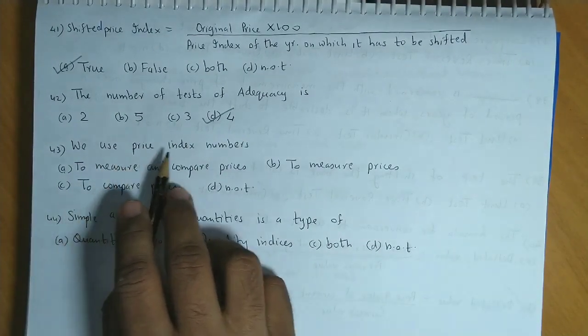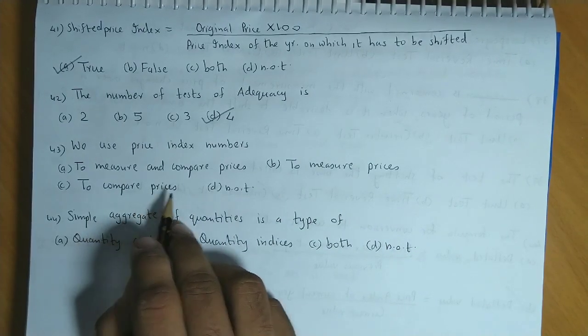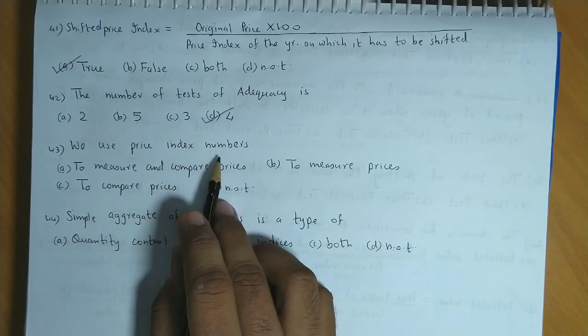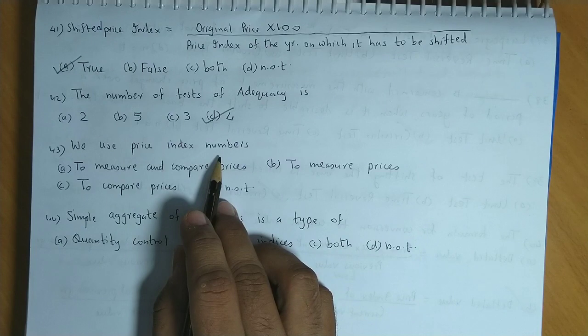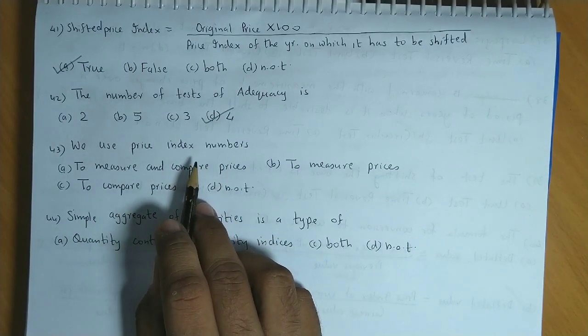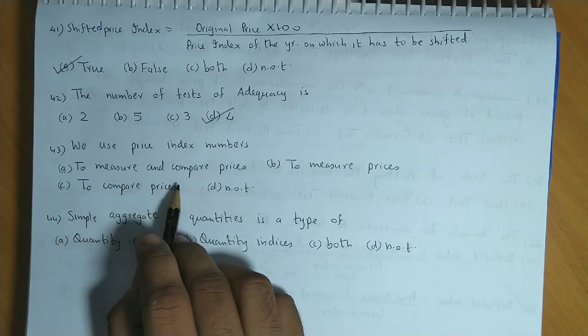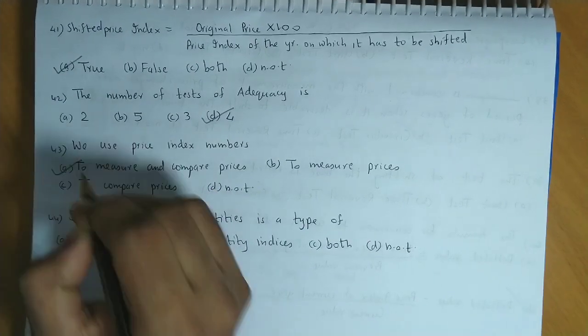Now we use price index to measure and compare prices, to measure prices, to compare prices, ya fir none of these. A price index numbers calculate karte wakt, we need to first measure the prices, and then calculating the index numbers, we can also compare the changes in the prices. So the answer is option A, to measure and compare the prices.